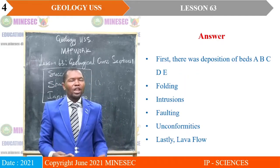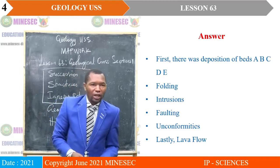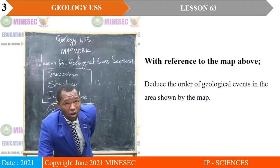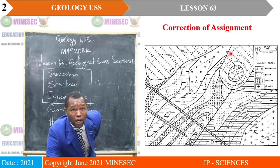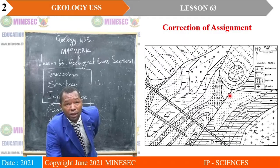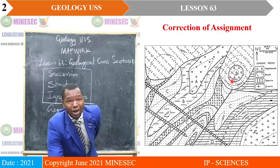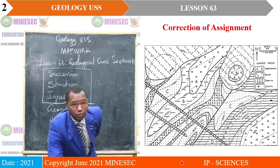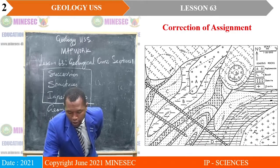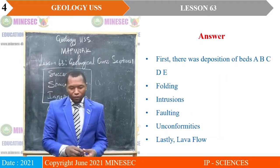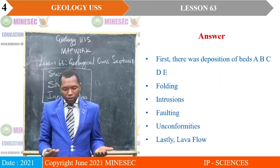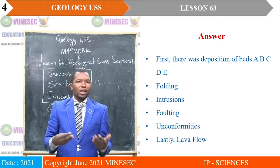Then, after the fault, there was an unconformity. How do we know that there were unconformities after the fault? It is because when you come to where you have the lava flow, you will realize that the fault ends there — it is not displacing the lava flow. So the lava flow came after the fault. That is the way to deduce. Then, after the unconformities, you now have the lava flow, which is the last thing in that area.